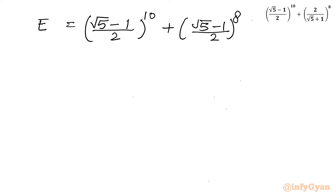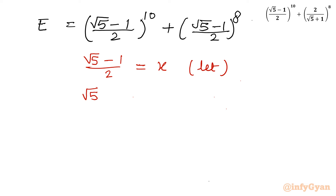Now I will use substitution as usual. Let x equal (√5 - 1)/2. Now I will cross multiply, so I can write √5 - 1 = 2x. Our expression also becomes x^10 plus x^8. This is our expression after using substitution.